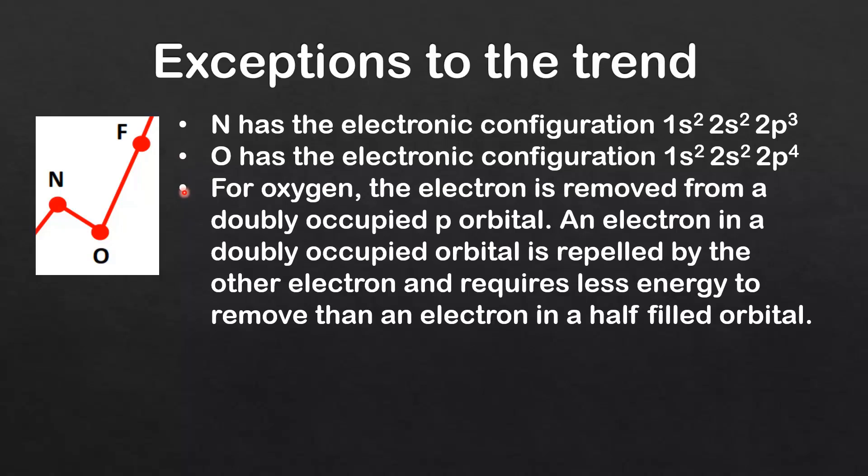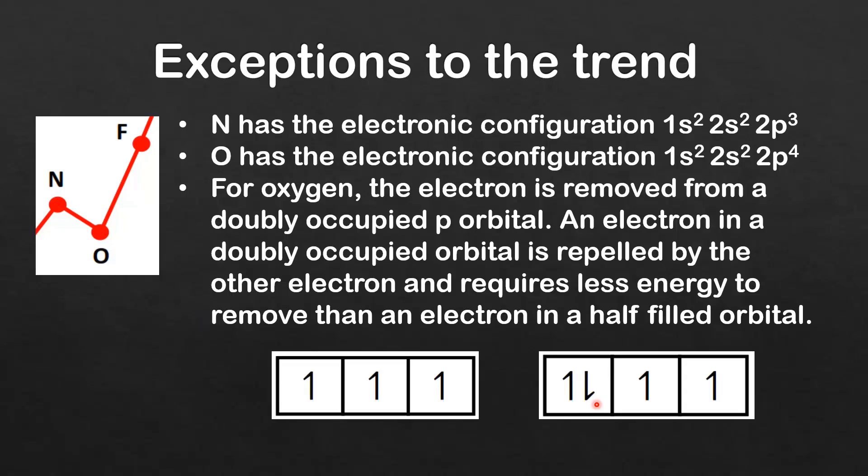For oxygen the electron is removed from a doubly occupied p orbital. An electron in a doubly occupied orbital is repelled by the other electron and requires less energy to remove than an electron in a half filled orbital. This means that an electron in a doubly filled orbital is easier to remove than an electron in a half filled orbital, and that's because of the repulsion between these two electrons that occupy the same orbital.